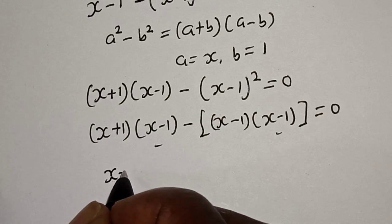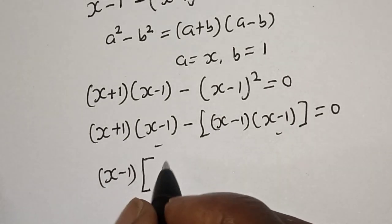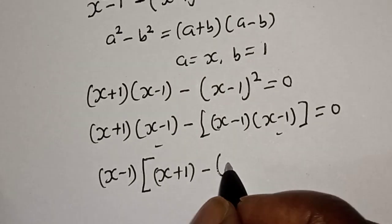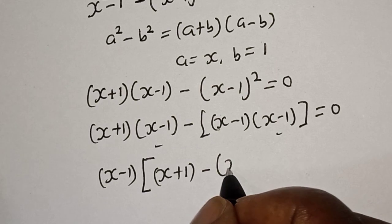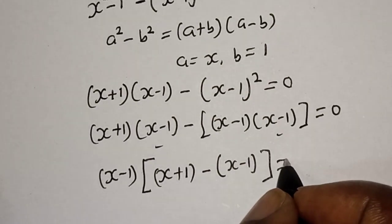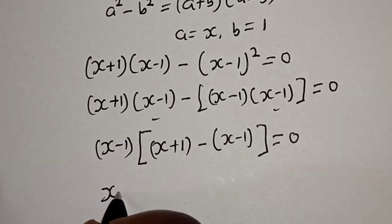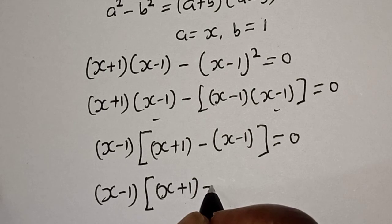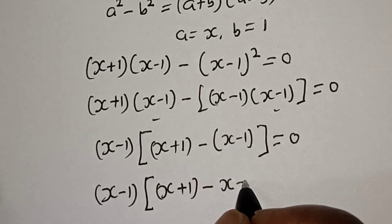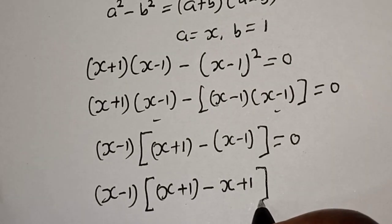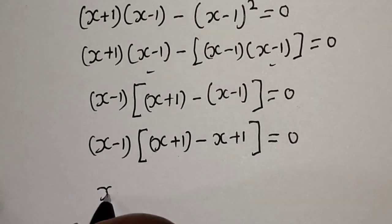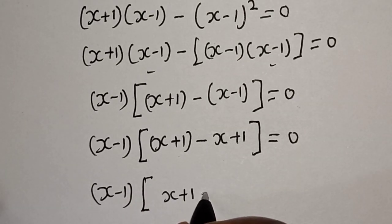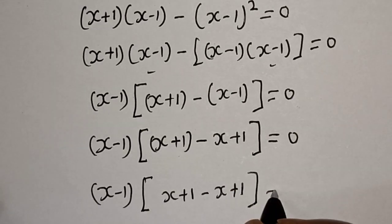So we have (s minus 1) multiplied by (s minus 1). If you divide through, we have (s plus 1) minus (s minus 1), which gives us (s minus 1) times [(s plus 1) minus (s minus 1)] is equal to 0.